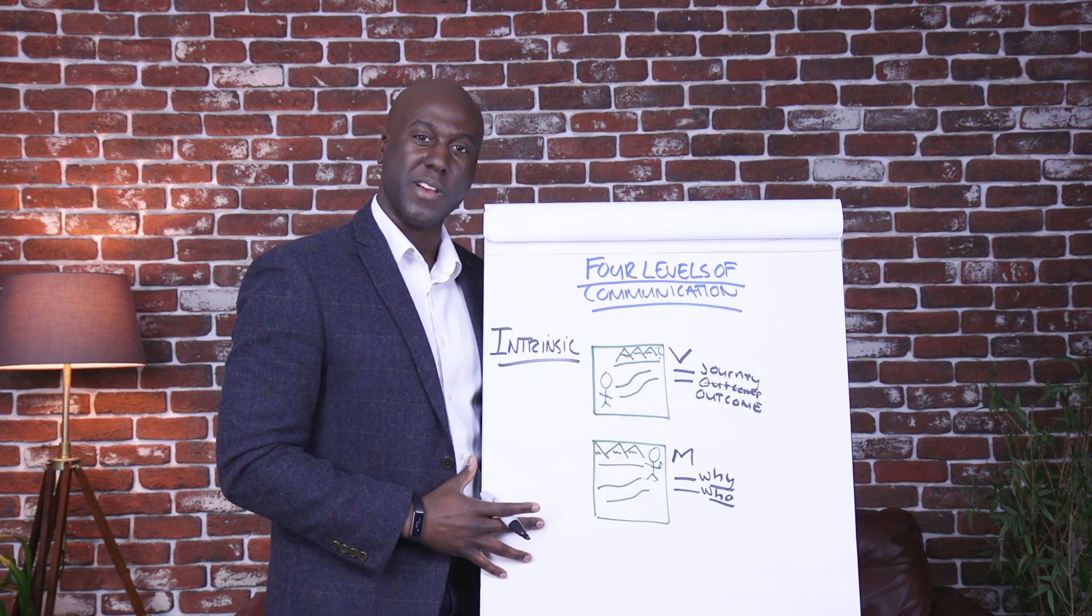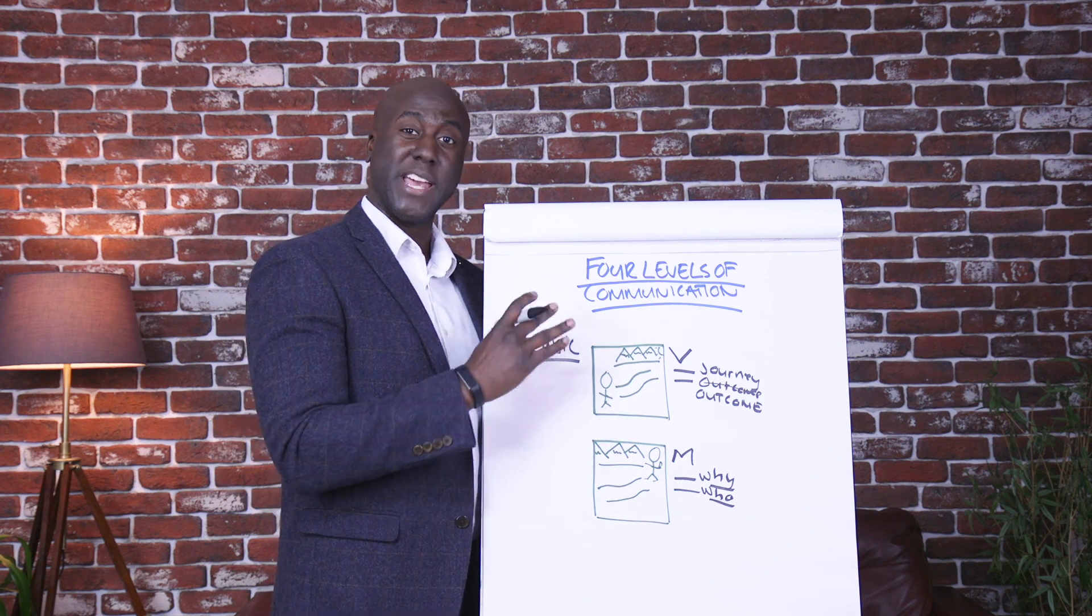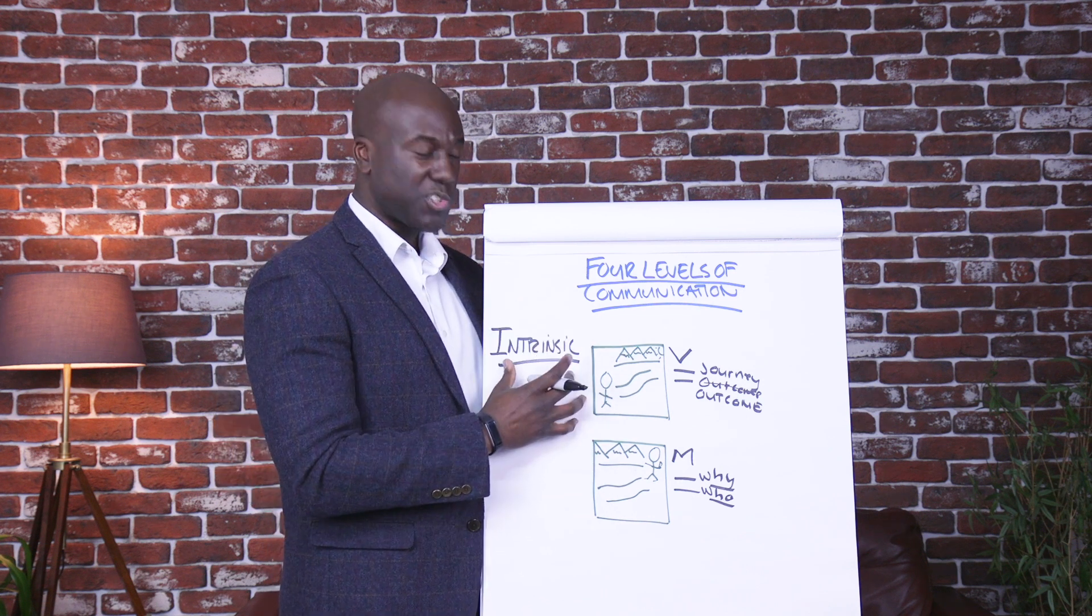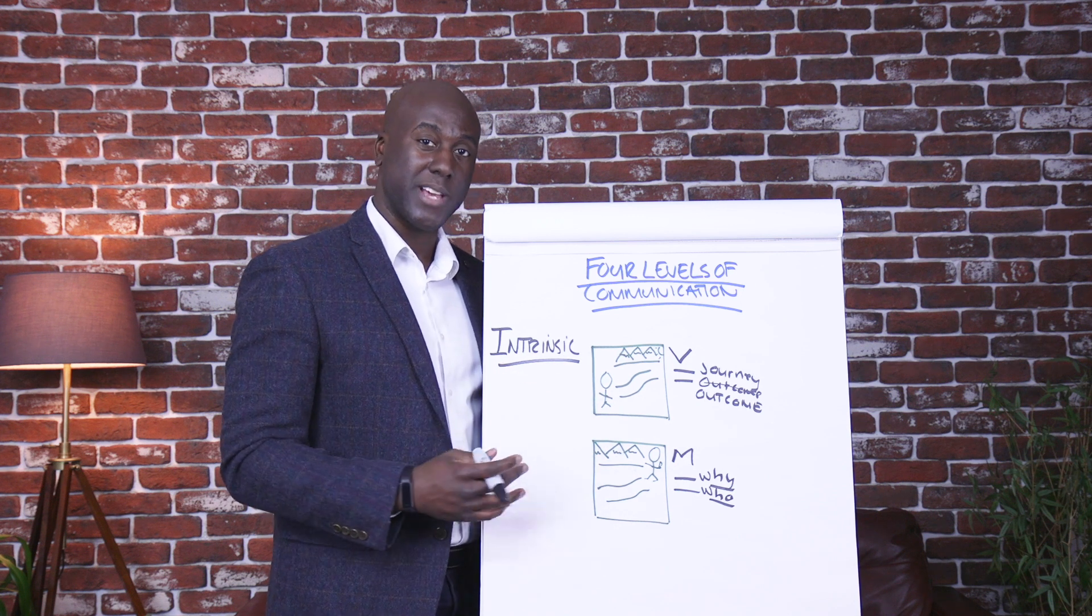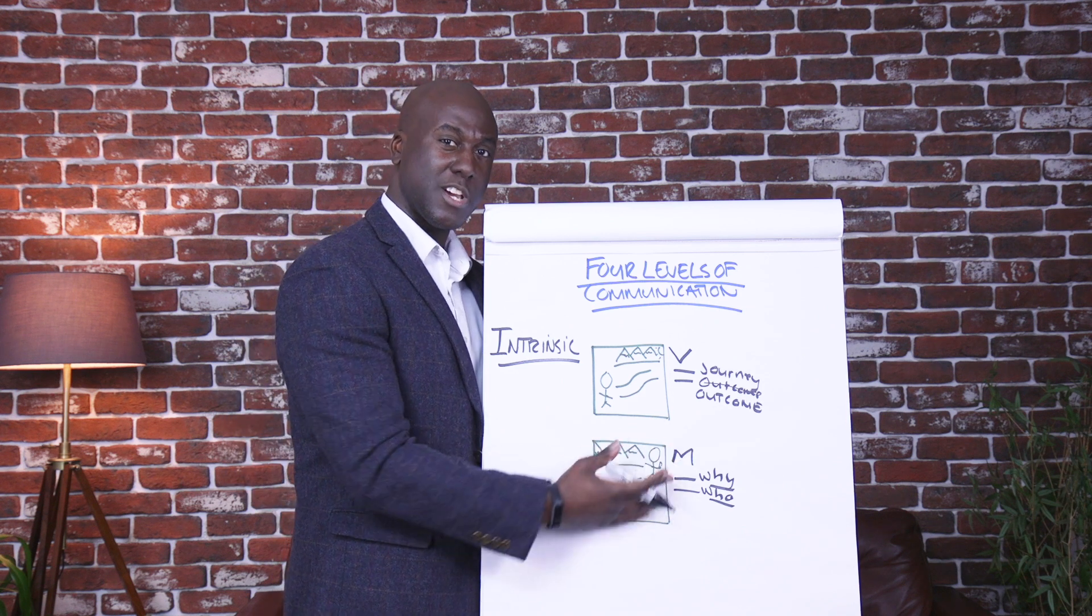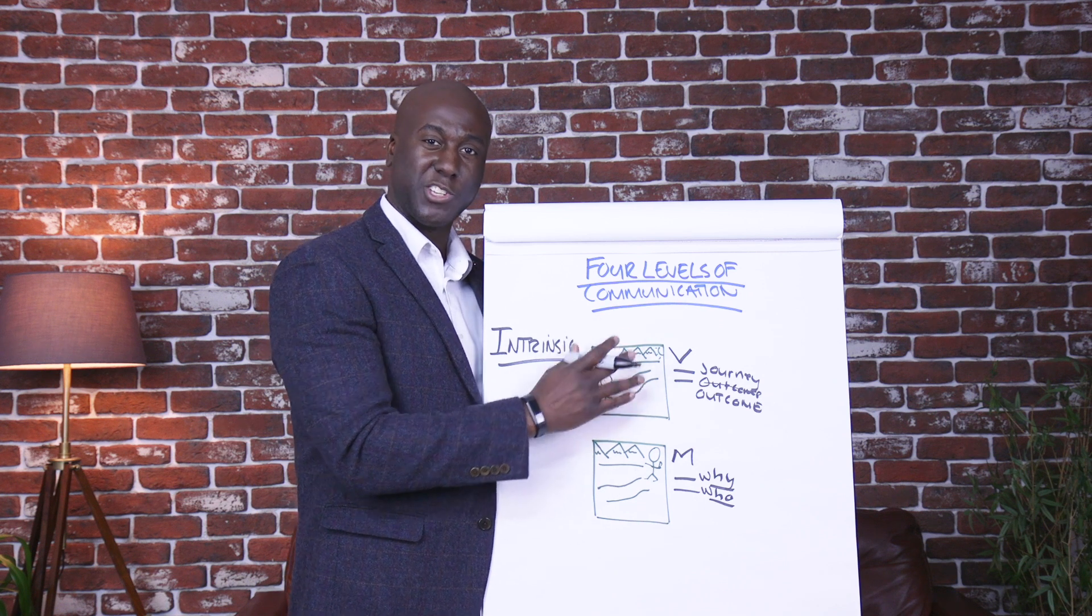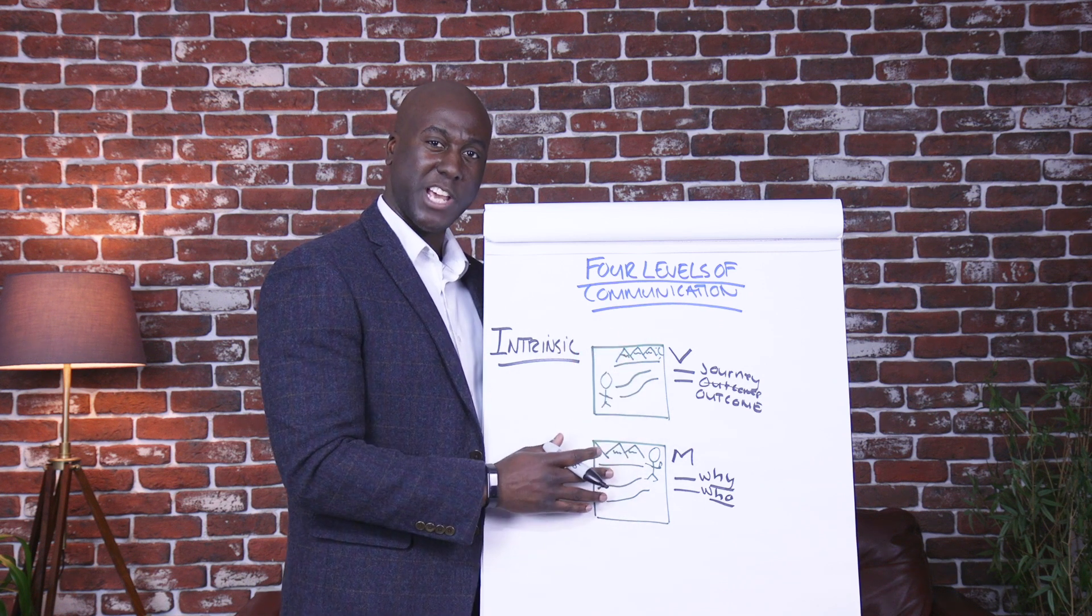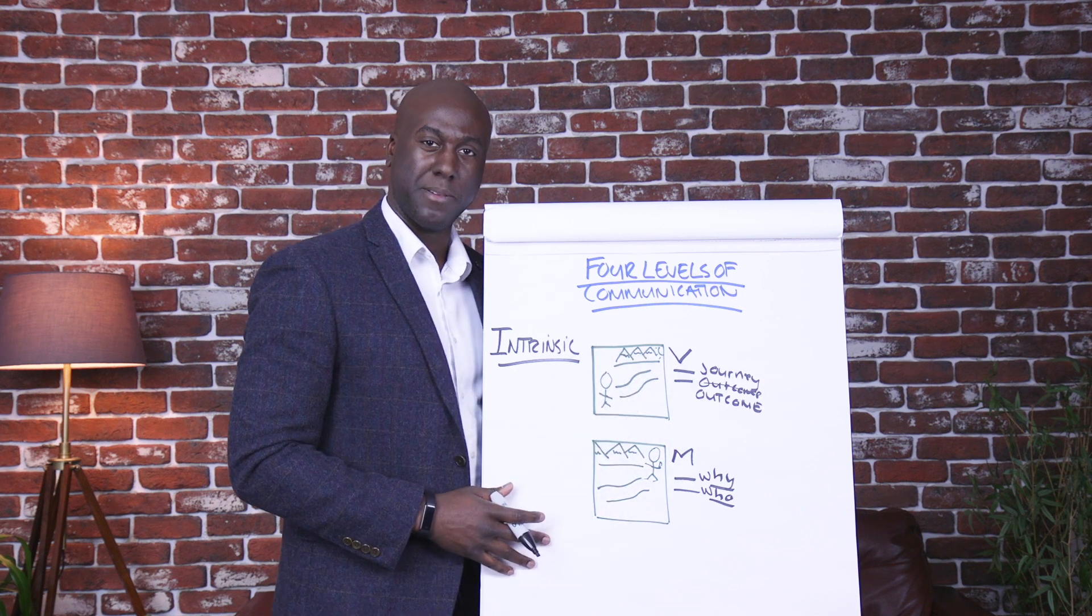So if you can hold these two areas together, both with the first two levels of communication in video one, extrinsic communication, we also want to spend time in intrinsic communication. I'd like to argue that it may be a 60-40 split. 60% of this, 40% of the other. Video one, extrinsic communication, talking about execution and expectation, and 60% of this, vision and mission.